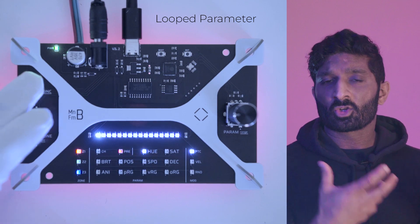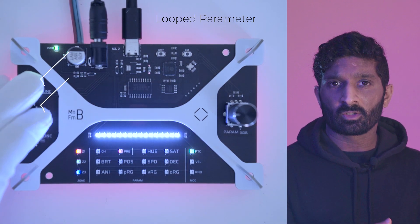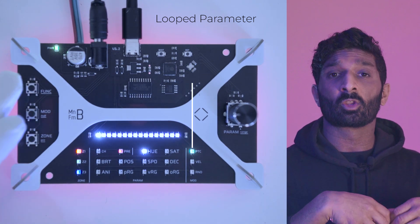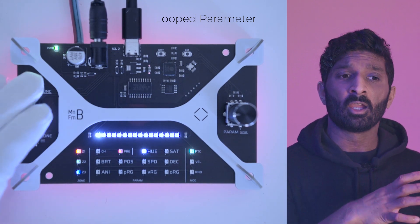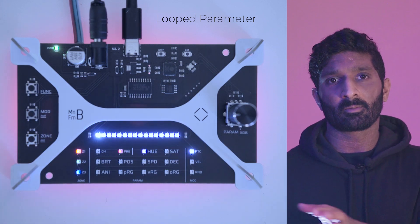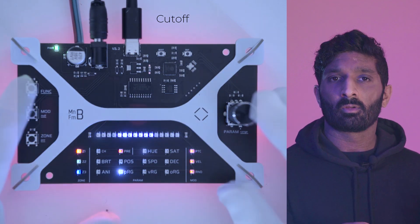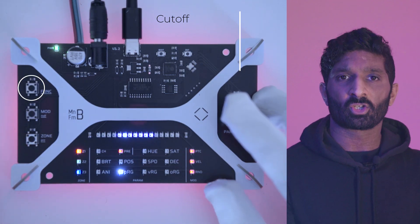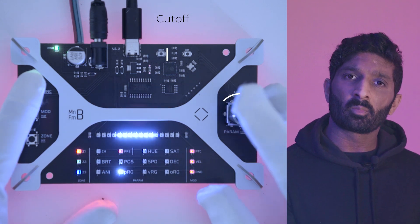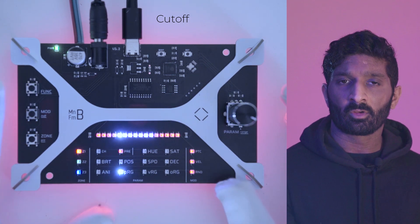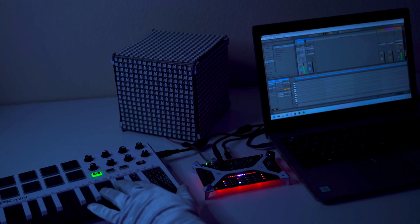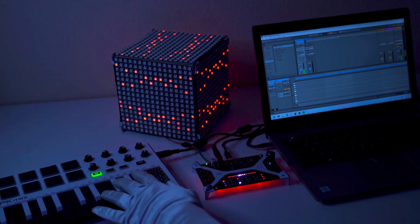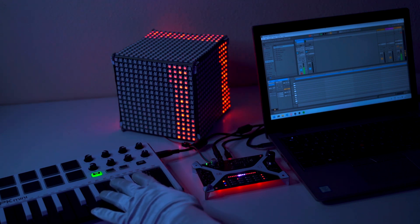When you are modulating a parameter, if you press function and mod, it turns green — that means you're now working with the looped parameters, which is useful for things like per-octave color scaling. If you're in pitch or velocity range and press function and parameter, you'll see a red bar — that is what we call cutoff, which means incoming pitches or velocities that are outside the designated range will simply not display an LED.